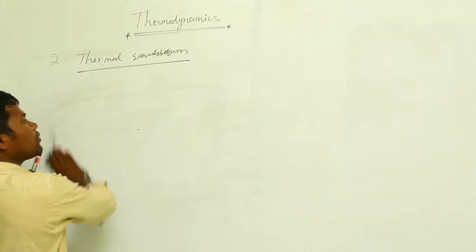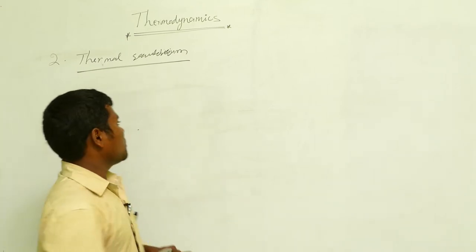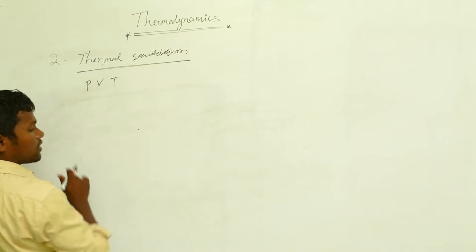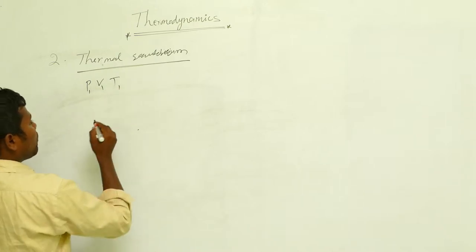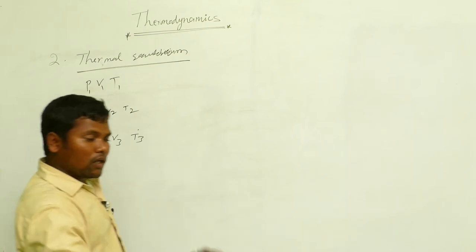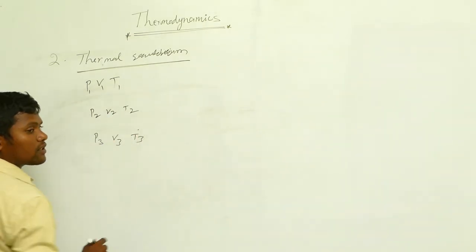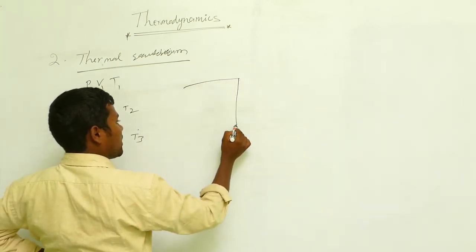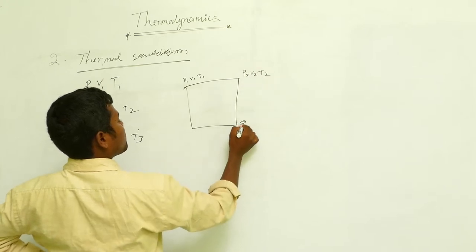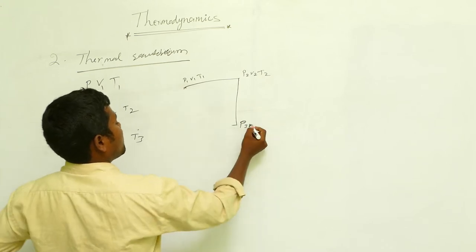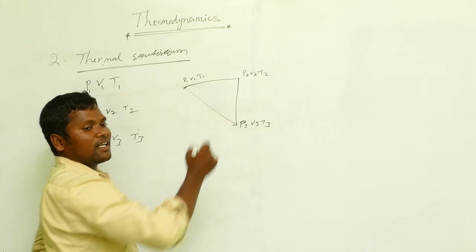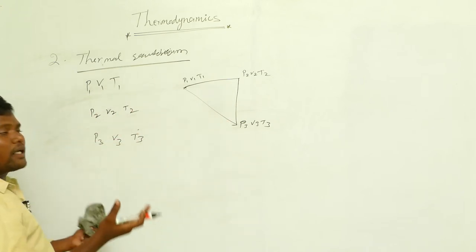Another point in thermal equilibrium is internal energy and cyclic process. The system has initial state P1, V1, T1, then goes to P2, V2, T2, then P3, V3, T3. If you want to return to the initial state, that is a cyclic process — you started at one point, went through different states, and came back to P1, V1, T1. These states may or may not be in equilibrium.